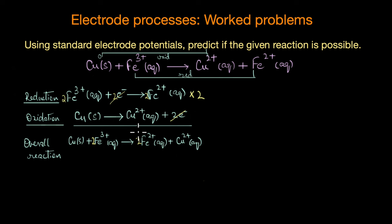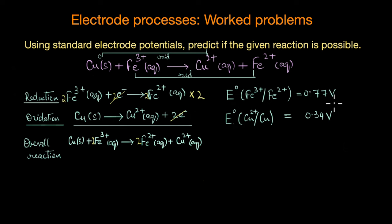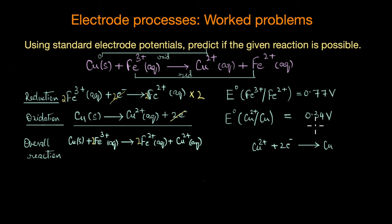To determine if this reaction is possible, we use standard electrode potentials. The standard reduction potential for Fe³⁺/Fe²⁺ is +0.77 V, and for Cu²⁺/Cu is +0.34 V. However, since copper is undergoing oxidation — the reverse of the reduction reaction Cu²⁺ + 2e⁻ → Cu — we must reverse the sign. The oxidation potential is the negative of the reduction potential, so the value becomes −0.34 V.